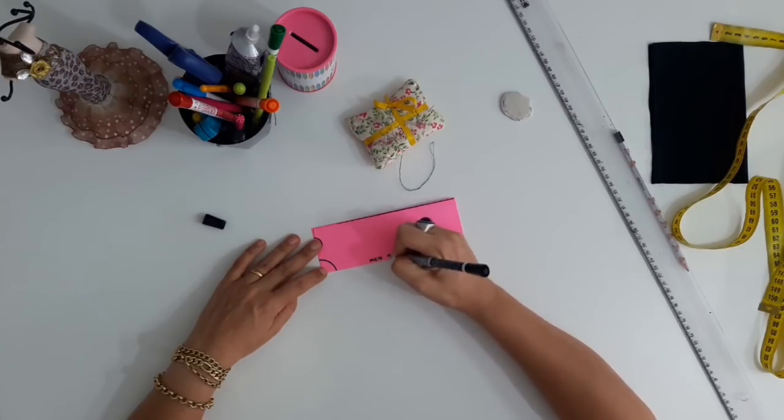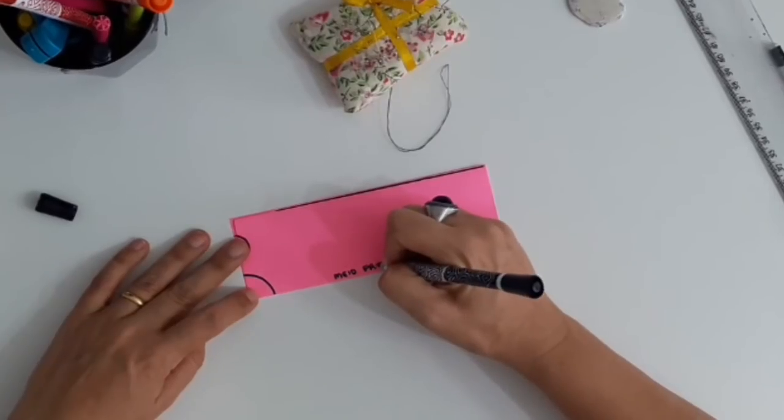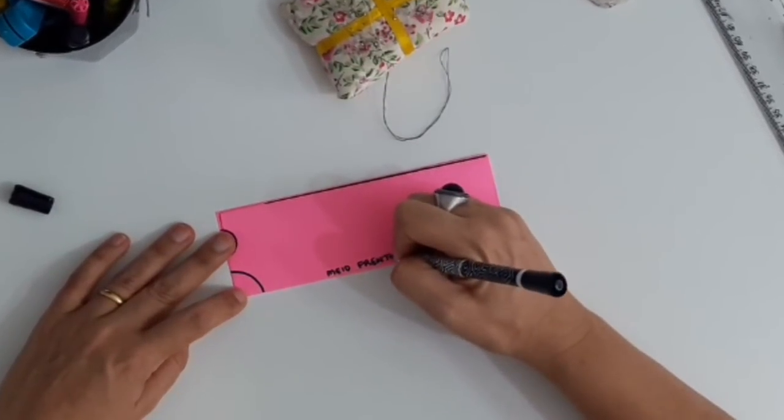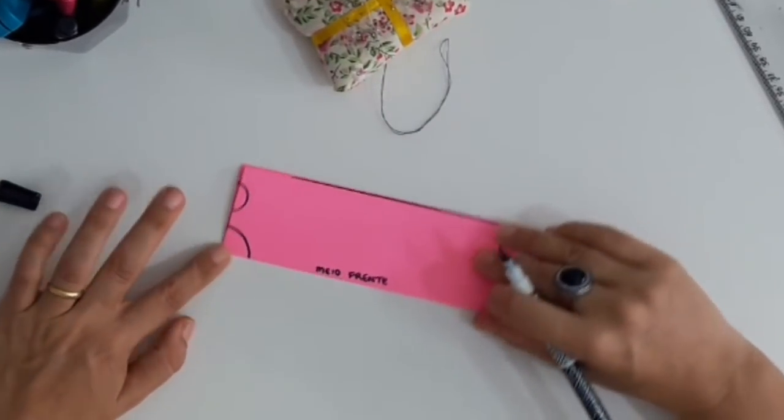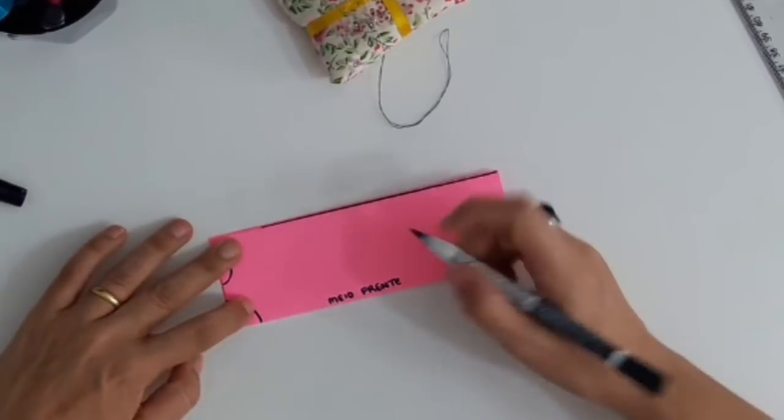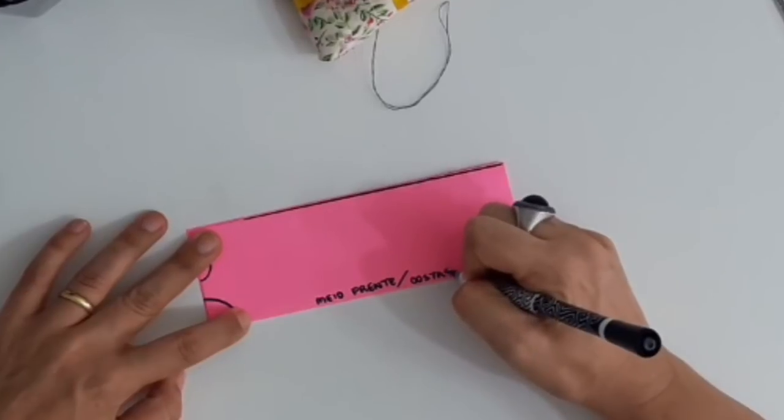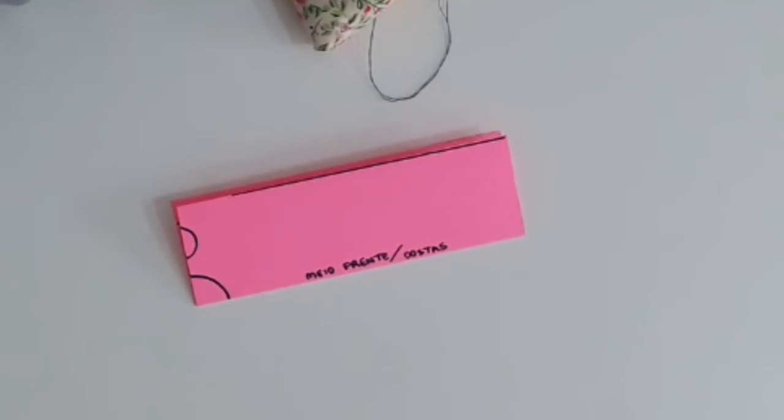Here, then, it's like if it was a mold. It's the middle front. I'm going to use the same model front and back. That's why I told you that it's very, very easy to do.